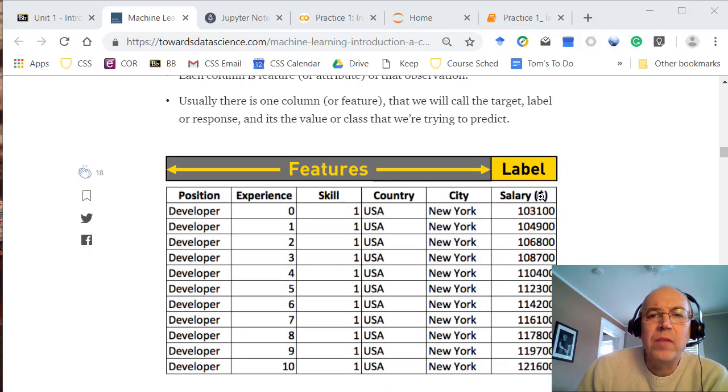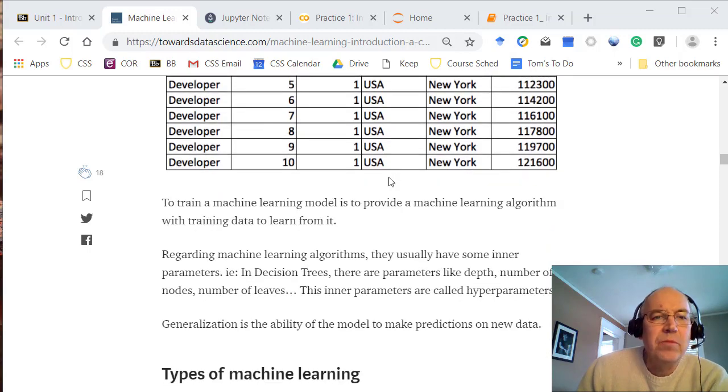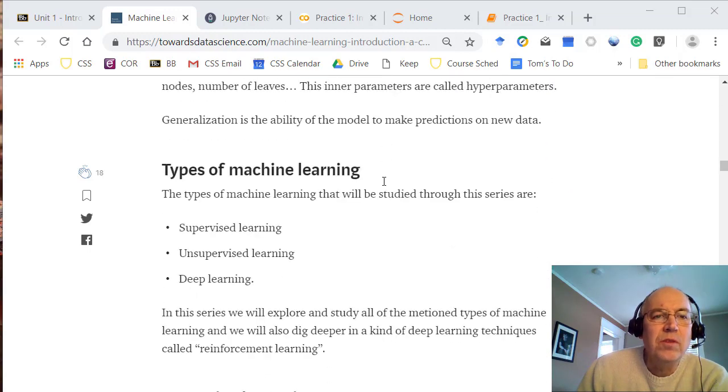Often there'll be one column here that might be a category or a label that we have to predict, either a numeric value or a text value. Like we'll look at measurements of cancer tumors and then one of the labels will just be whether it's benign or malignant. We'll often work with data in this sort of grid or spreadsheet-like format, but often it will be too big to actually bring into a spreadsheet, so we'll be using other tools.